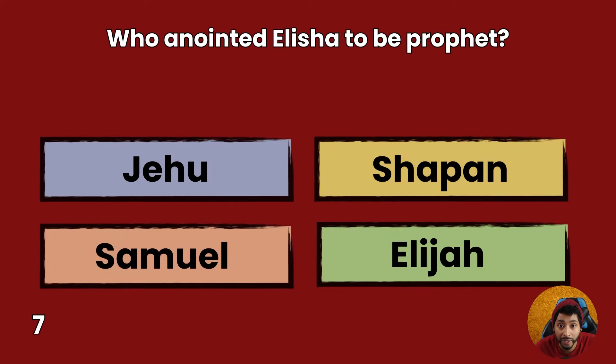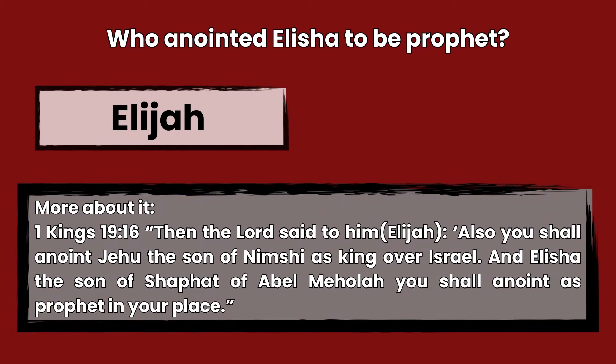Question 7: Who anointed Elisha to be prophet? Jehu, Shaphan, Samuel, or Elijah? Answer: Elijah. 1 Kings 19:16 — Then the Lord said to him, also you shall anoint Jehu the son of Nimshi as king over Israel, and Elisha the son of Shaphat of Abel Meholah you shall anoint as prophet in your place.